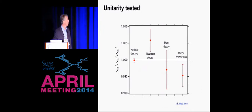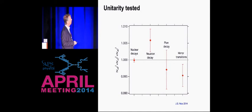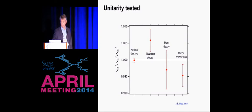This is just a summary from Jeff Nico on where we are on the unitarity tests. Still by far the most precise test is coming from the nuclear decays. Neutron decay isn't there yet. Pion decay isn't there yet. And you can also do this with mirror transitions by using correlations and the strength just as you can with the neutron. Generally speaking, very nice agreement.